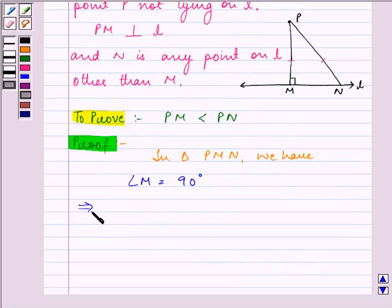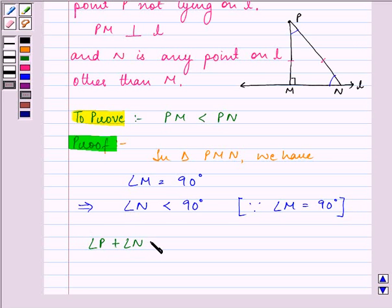Therefore that implies angle N has to be less than 90 degrees. So we have that angle P plus angle N has to be equal to 90 degrees. This implies that angle N is less than 90 degrees.